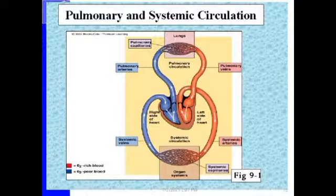Now let's talk about the circulation of blood within the body — outside the heart. This diagram shows both pulmonary circulation and systemic circulation. Blood goes from the heart to the lungs through the pulmonary artery, and from the lungs back to the heart through the pulmonary veins, then from the heart to the rest of the body through the aorta and back through the vena cava.